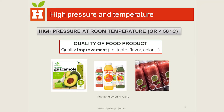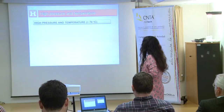The quality of food products treated by high pressure at room temperature is very high because we can maintain the color, the flavor, and the nutrients present in the raw materials. We can obtain very high quality food products, and there are now several products treated by this technology available on the market.